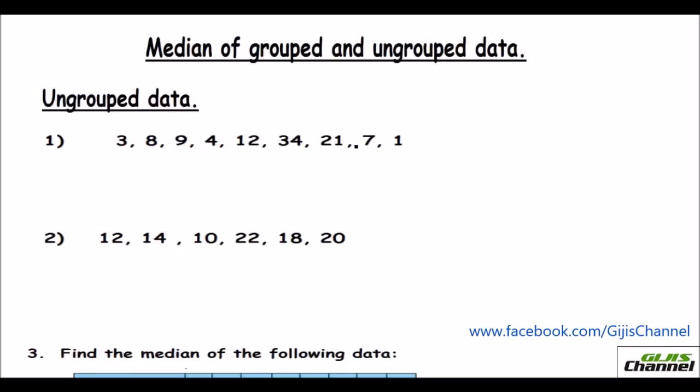So when the values are listed out, for median always remember you arrange the values in ascending or descending order. I have arranged it in the ascending order. Just count the number of numbers. You have 9 numbers in all. So your n equals 9.